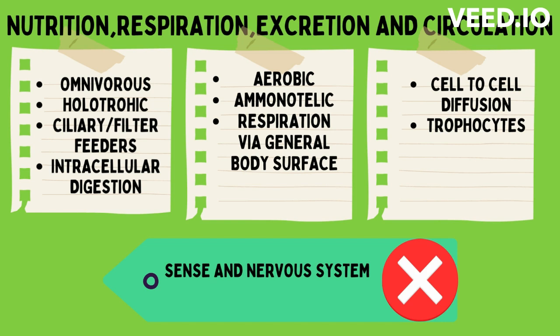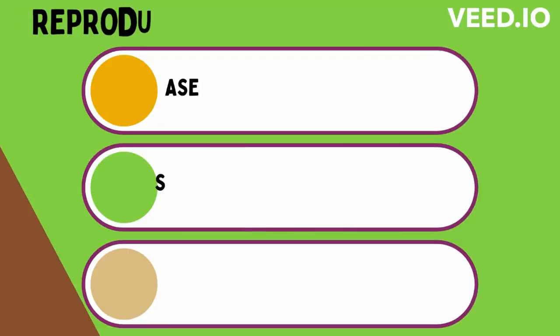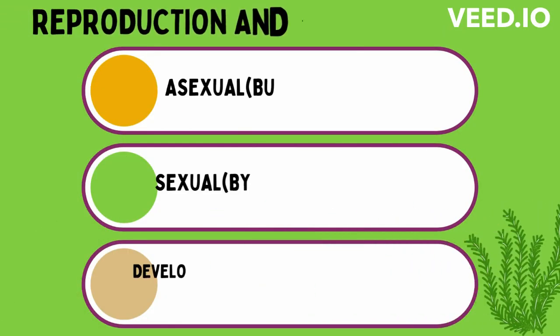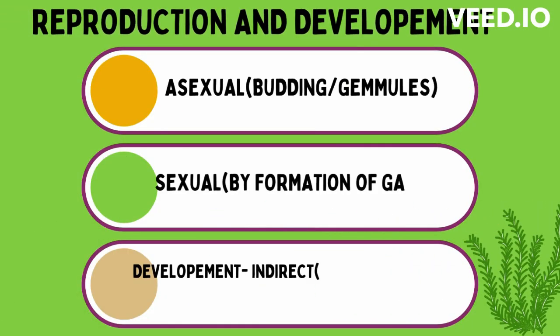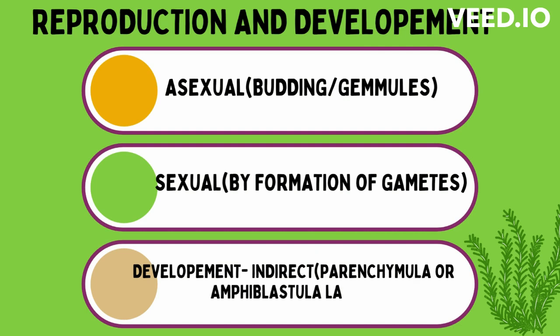Sponges do not have special sensory or nerve cells, so there is no coordinated action of the whole body, but individual cells are sensitive and react individually. Regarding reproduction, Porifera carry out both asexual and sexual reproduction. Asexual reproduction generally occurs by external budding or by forming internal buds called gemmules.